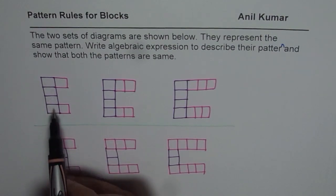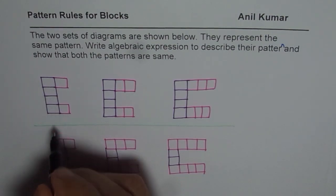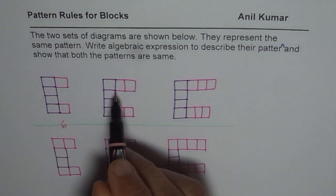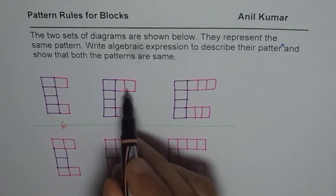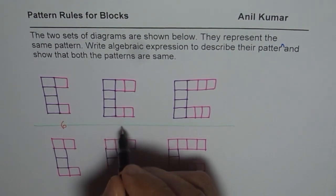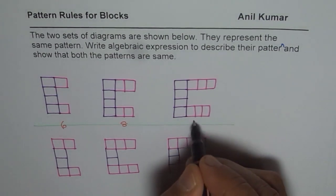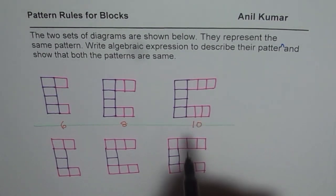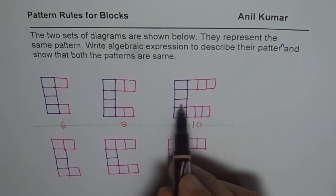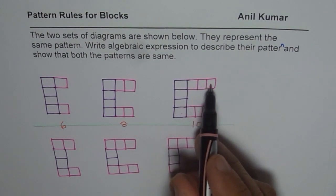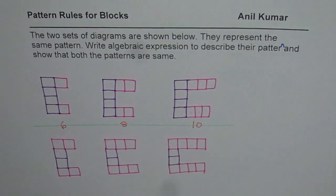Now, how many blocks are there? 4 plus 2 equals 6, so we can write 6 here. The number of blocks in the next figure is 2 more than 6, which is 8. And then again 2 more gives 10 blocks. Counting confirms: 1, 2, 3, 4, 5, 6, 7, 8, 9, 10 — correct. So that is how the blocks are.